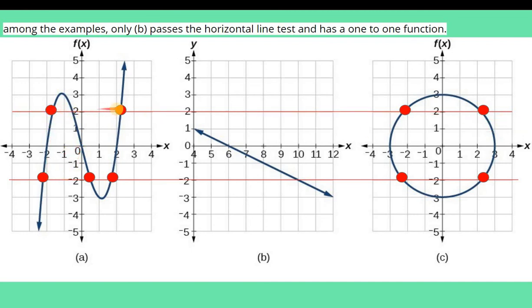Because wherever I would draw the horizontal line for graph B, it would only hit it once. Whereas for graph A, if you would draw it here, it would hit it twice, one, two, three. And here, one, two, three. The same manner for graph C. Twice, regardless of where you write it.